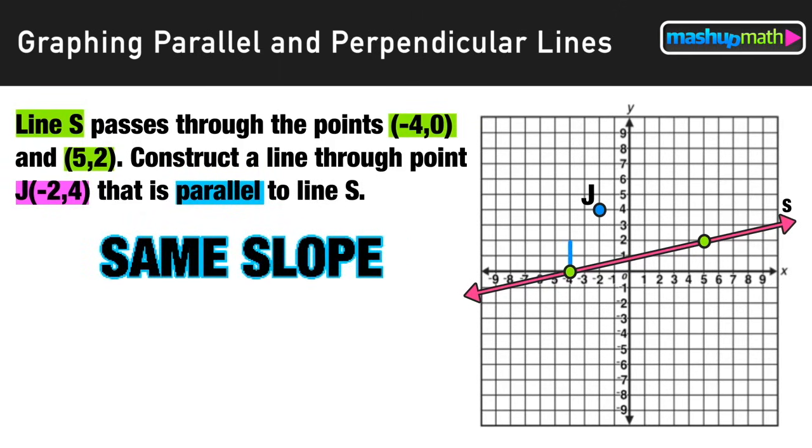So we can go ahead and find slope the easy way just by calculating rise over run. We should notice that moving from point to point we're moving up two units and to the right nine, so the slope of line s is two over nine. Now we know that our parallel line will have the same slope.